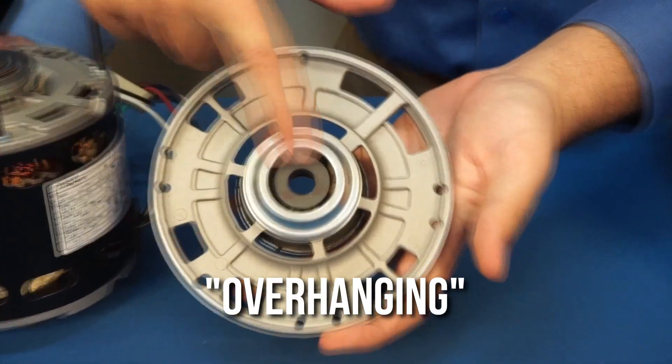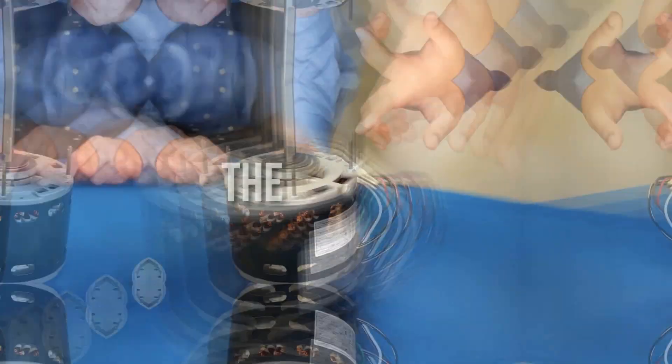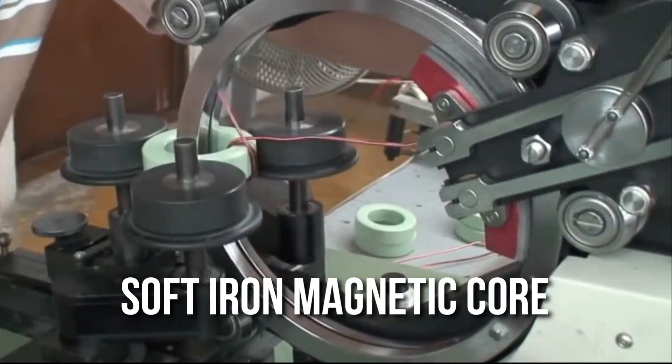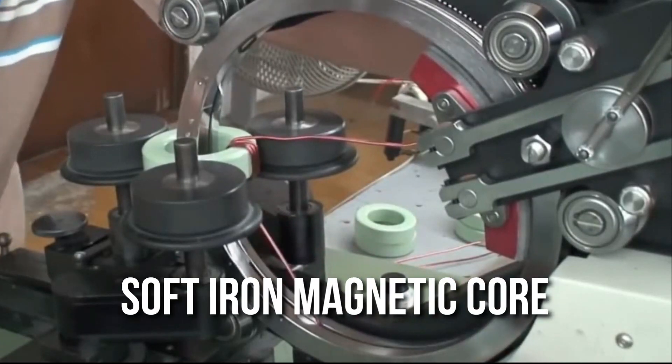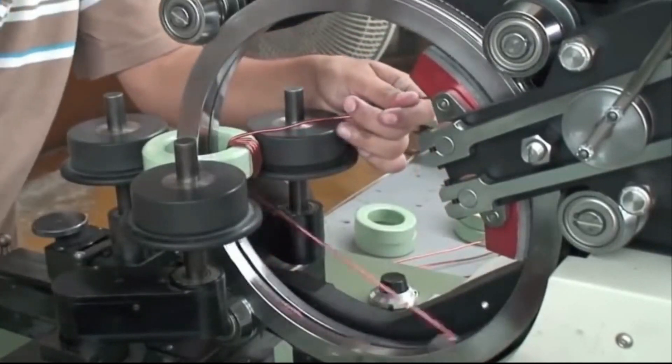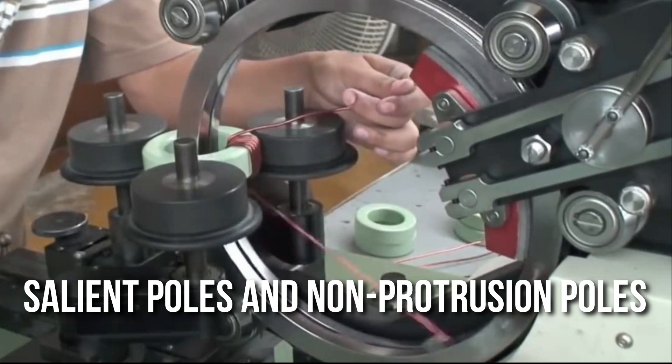The load is said to be overhanging because the force of the load is applied beyond the outermost bearing. The windings. A winding is a coiled wire that is typically wound around a laminated soft iron magnetic core to form a magnetic pole when an electric current flows through it. Electric motors have two basic magnetic field pole configurations, salient poles and non-protrusion poles.